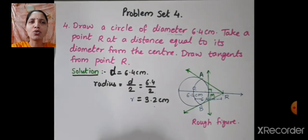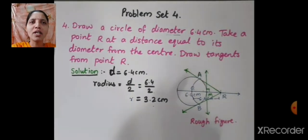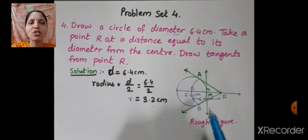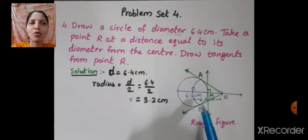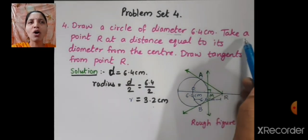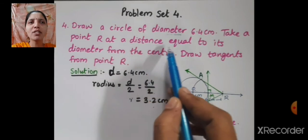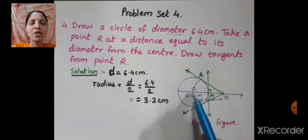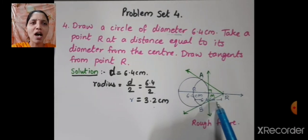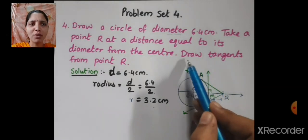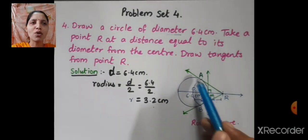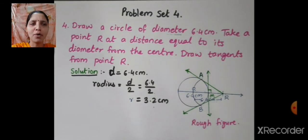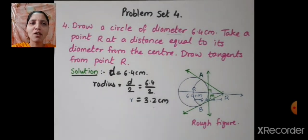With this radius we are going to draw one circle and the center of the circle is O. First you have to draw the rough figure. Here I have drawn the circle with center O and radius 3.2 cm. Then you have to show the diameter of 6.4 cm. Take point R at a distance of 6.4 cm from the center. Then draw tangents from point R. For that I have drawn the perpendicular bisector of OR and then I have drawn two tangents. So, this is the rough figure.